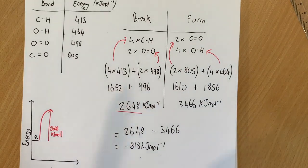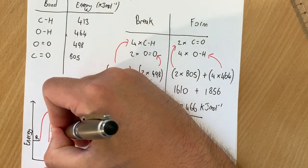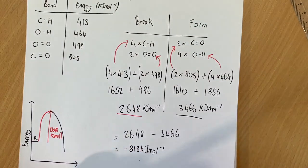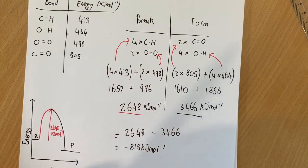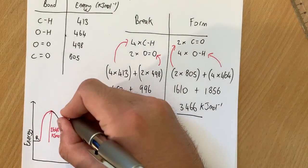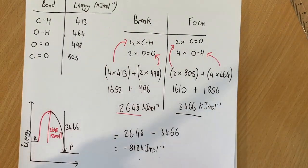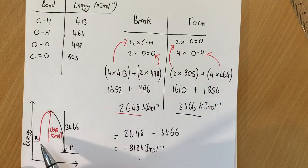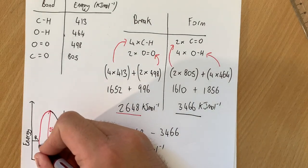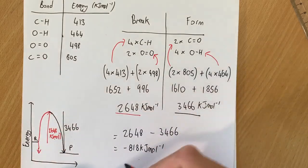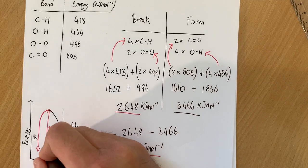As it comes back down the other side, this number 3,466 coming back down, that is the energy change with the energy released to the products. Now what you can see here, this bit here from the top to the bottom, that is 3,466. And what we can see is that the energy to break is less than the energy needed to give. So we end up with a difference between the reactants and the products which comes down like this, which corresponds to minus 818. So this is our energy change.